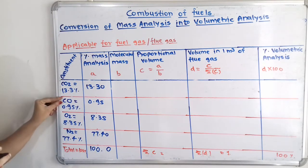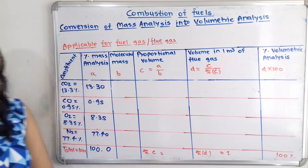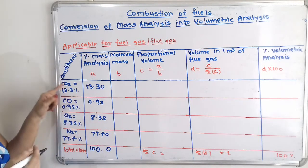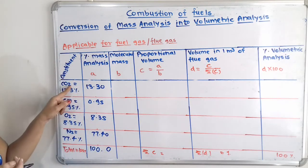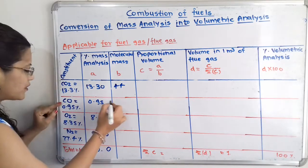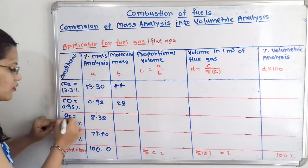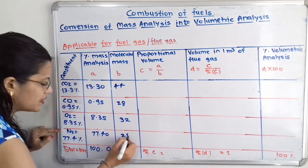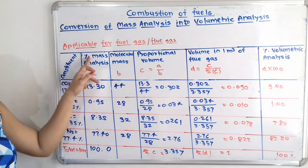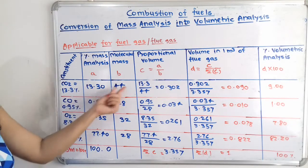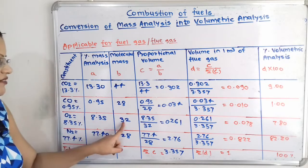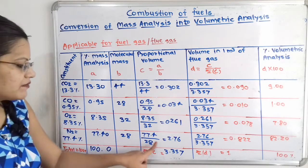Now we calculate molecular mass. Atomic mass of carbon is 12, oxygen is 16. For CO₂: 12 + 32 = 44. For CO: 12 + 16 = 28. For O₂: 32. For N₂: 28. Next, proportional volume C = A ÷ B: 13.3 ÷ 44 = 0.302; 0.95 ÷ 28 = 0.034; 8.35 ÷ 32 = 0.261; 77.4 ÷ 28 = 2.76.